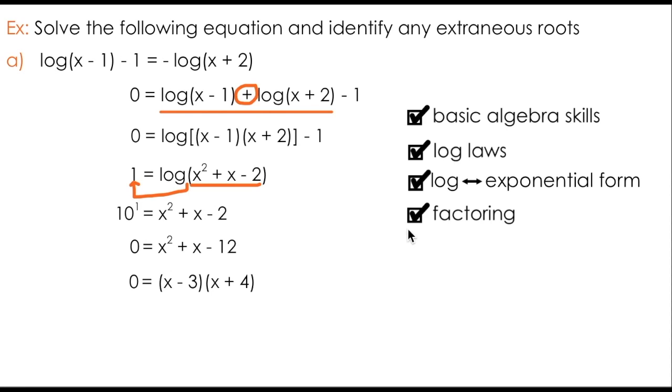I can apply my understanding of triangle factoring to rewrite x squared plus x minus 12 as a product of x minus 3 and x plus 4. Solving for the two x values that satisfy this equation, I get x equals 3 and x equals negative 4. So we've successfully solved this logarithmic equation, but remember we're also asked to identify any extraneous roots.